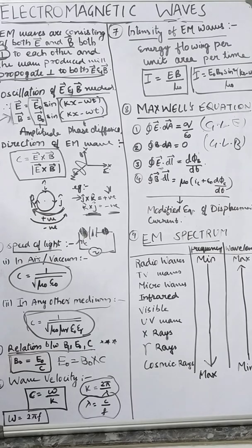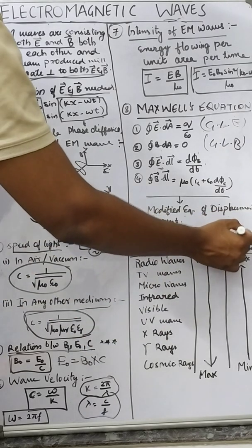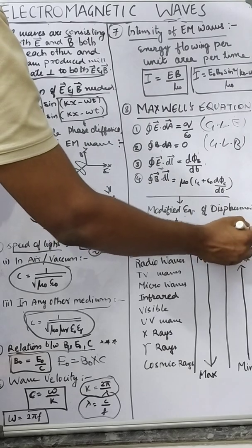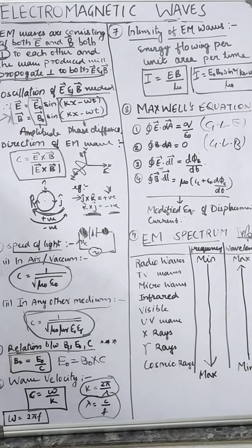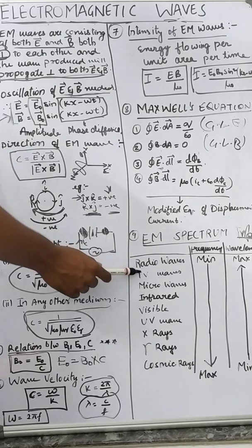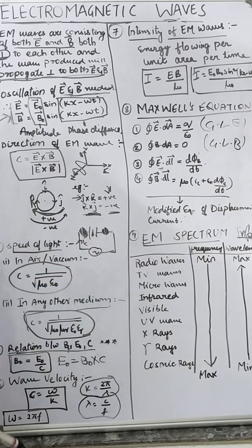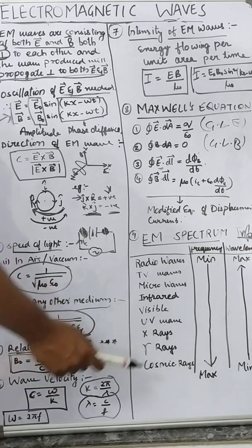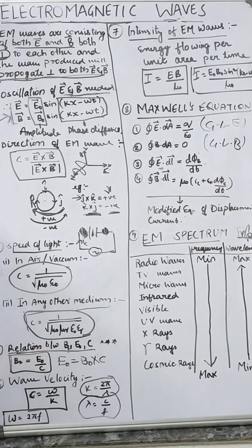In this case, we have the EM spectrum. In the electromagnetic spectrum, we have a total of 9 waves: radio waves, TV waves, microwave waves, infrared waves, visible light, UV waves, X-rays, gamma rays, and cosmic rays.